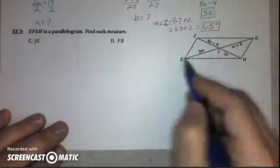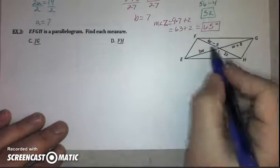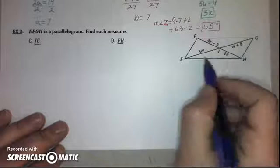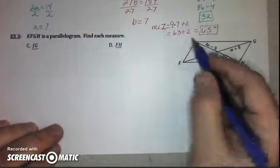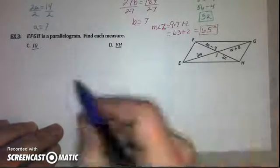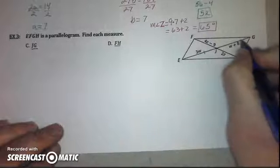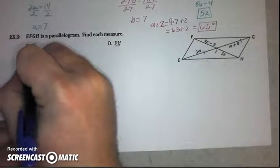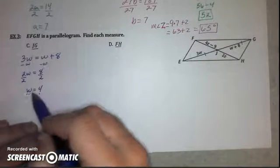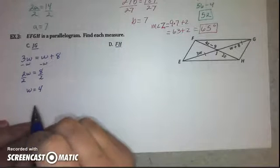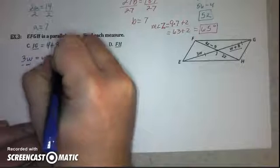In Example 3, we are given another parallelogram and this time they use the diagonals, so we remember that the diagonals bisect each other. To find JG, we recognize that 3W and W plus 8 are both half of the full diagonal EG, so they are equal to each other. Setting 3W equal to W plus 8 and solving gives W equals 4. Plugging back in: W plus 8 becomes 4 plus 8, which is 12. So JG equals 12.